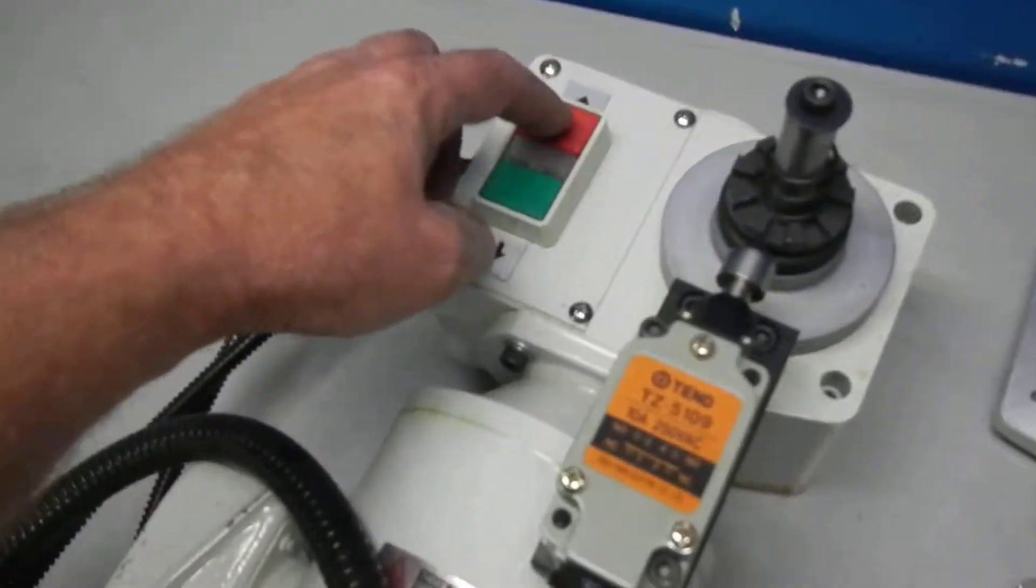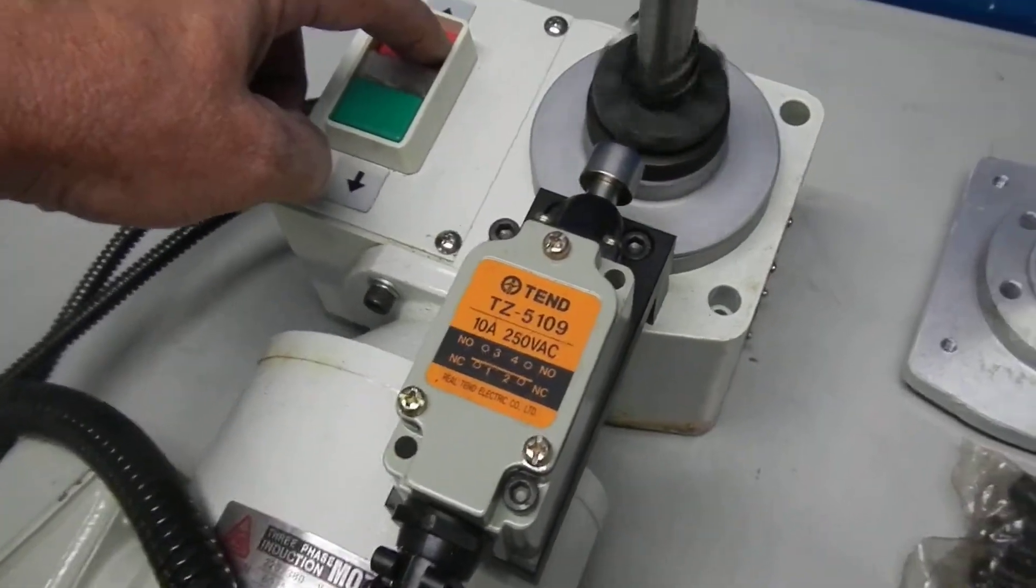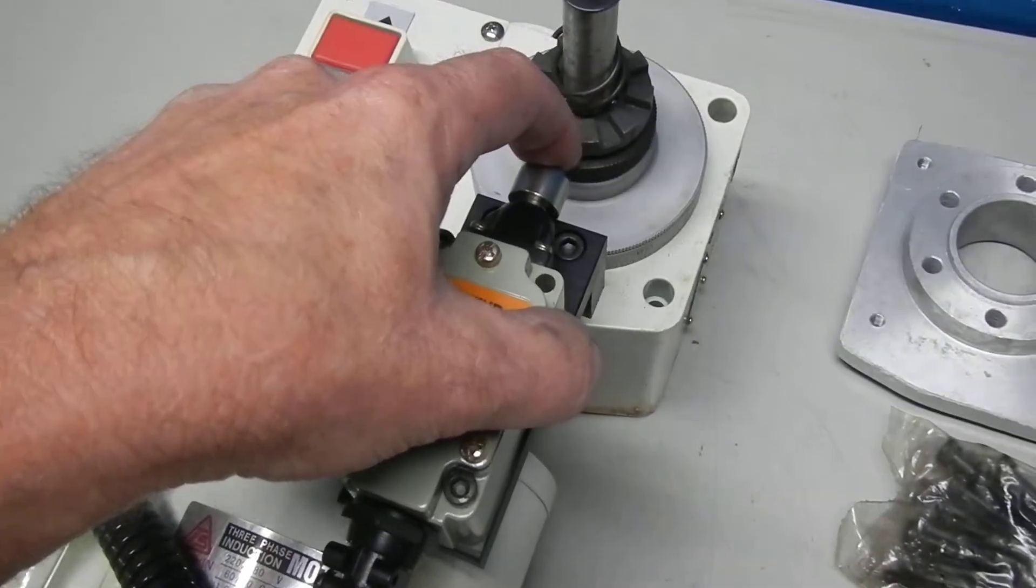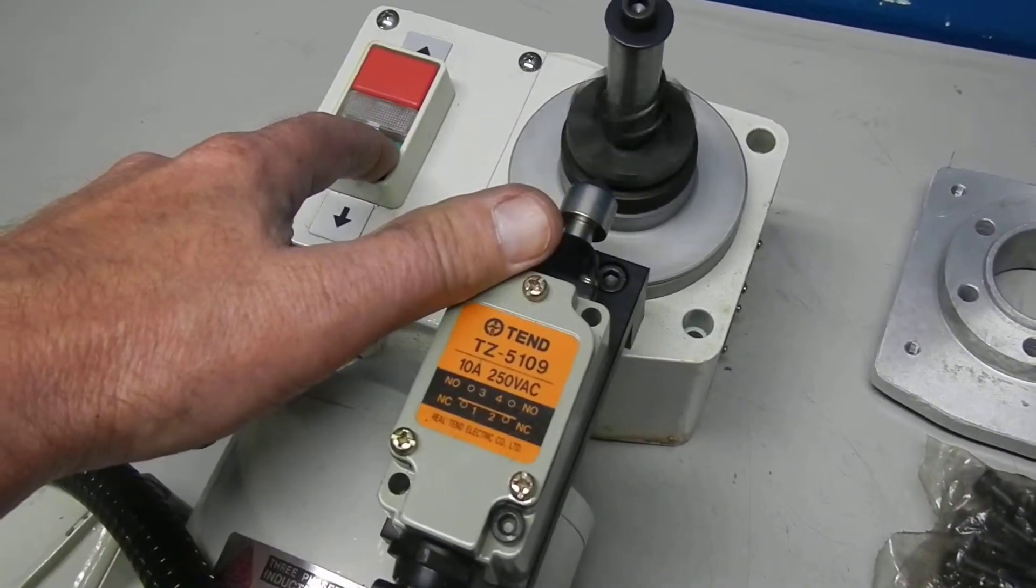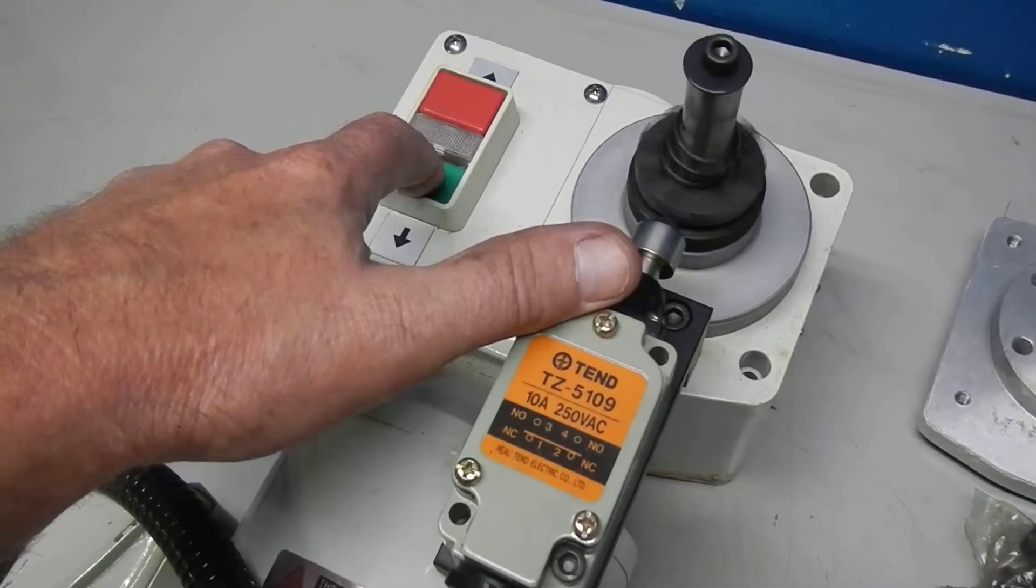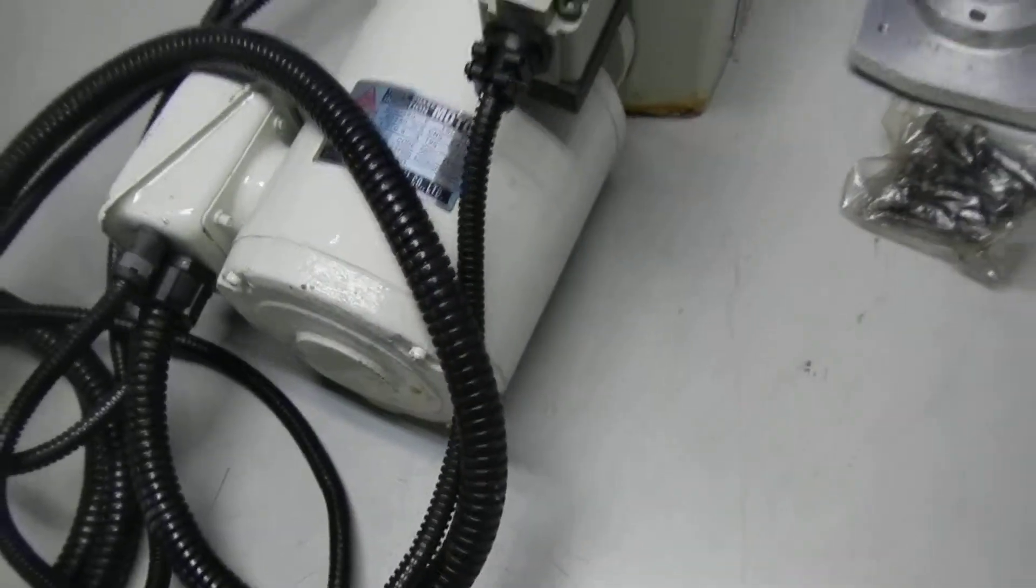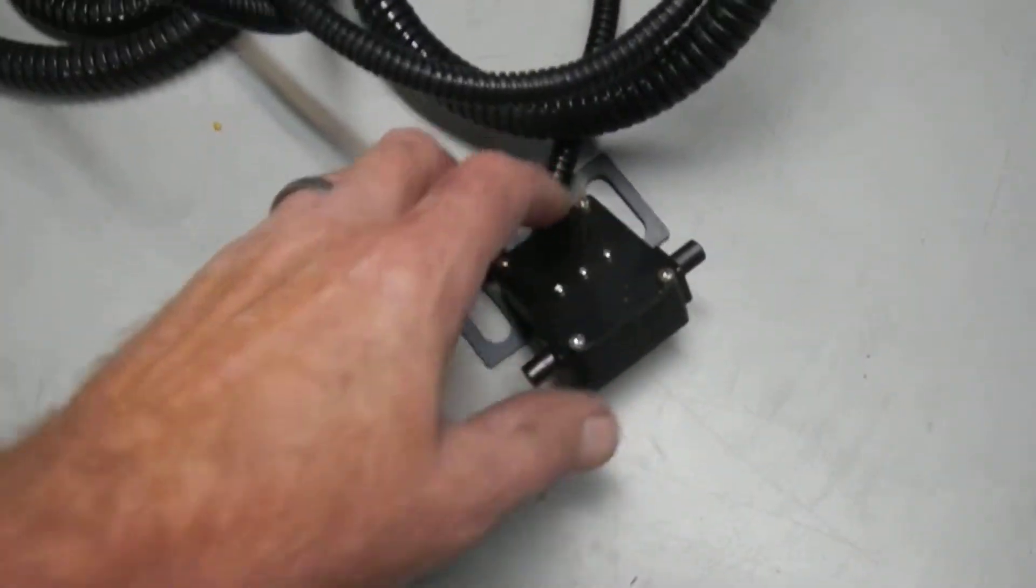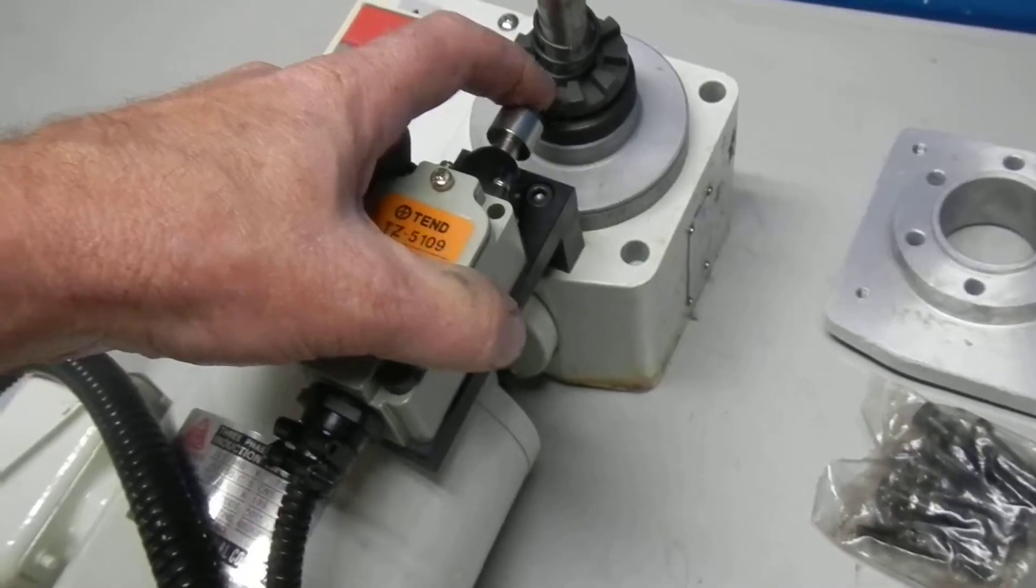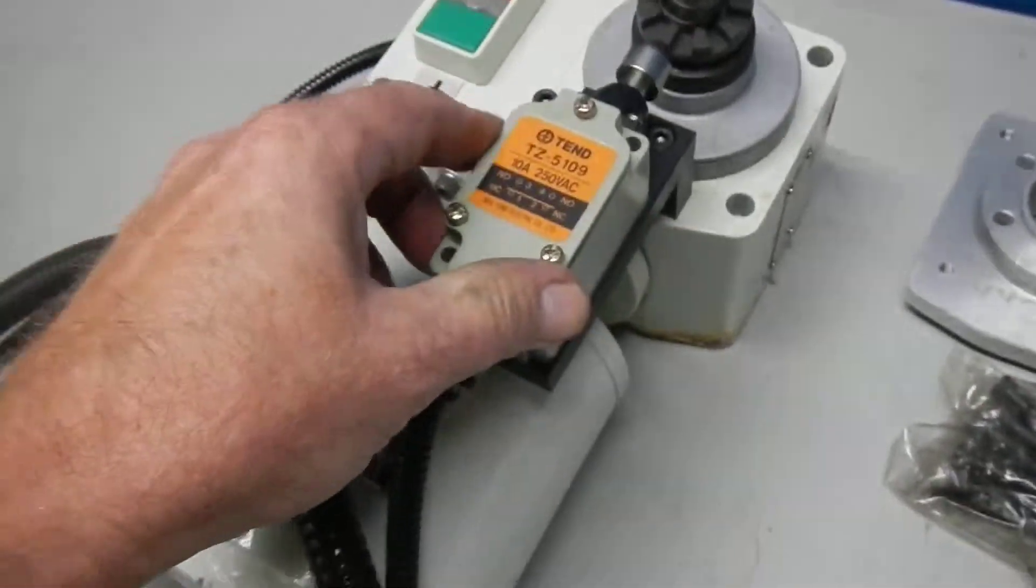In any case, what we're going to do is power it up. All right, so here's your indicator light for your power. And you've got forward and reverse. There's your stop switch right here. And I assume that this is another stop switch for it.